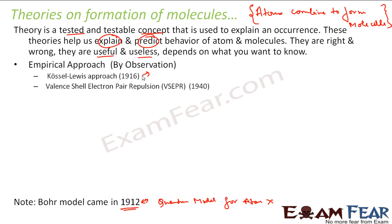This theory had merits but also demerits, because it was unable to give the exact structure of the molecule. So a new theory was proposed in 1940, with the same experimental approach — a lot of experiments were done and they came up with a theory. This theory was the VSEPR theory.